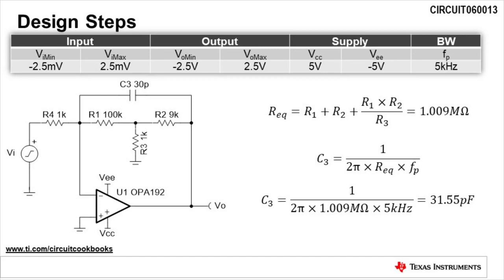We will use Req to calculate C3, which is equal to 1 divided by 2 pi times Req times Fp. C3 is calculated to be 31.55 pF. Since this is not a standard capacitor value, we will use the next closest value of 30 pF as shown in the schematic.